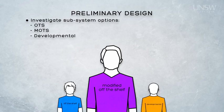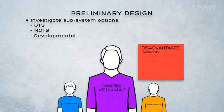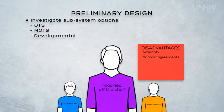Modified off the shelf items have many of the same advantages as pure off the shelf options, but we need to be careful about a few things, like warranty and support agreements. Making changes to an item after it has been procured may render these agreements invalid. If we are going to modify an item, we will need to consider the modification to be a detailed design task, and we'll need to develop the modification in a controlled manner.